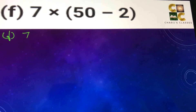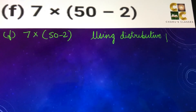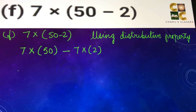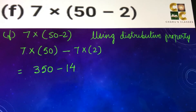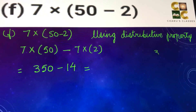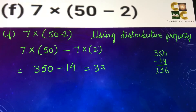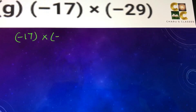Part f: 7 into 50 minus 2. Using distributive property, 7 is multiplied with 50 and 7 is multiplied with 2. So 7 into 50 is 350, minus 7 into 2 is 14. The answer is 350 minus 14, which is 336.